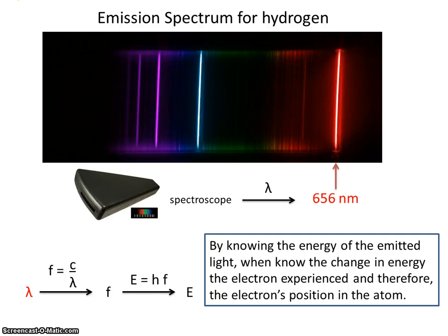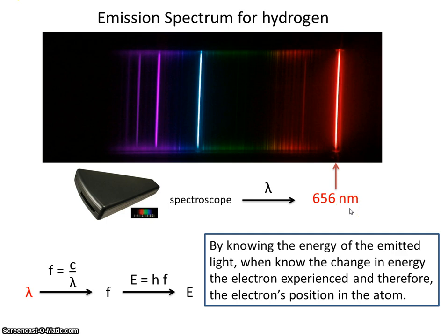So in summary, every element gives off its own colors of light — it's almost like a fingerprint that's unique for each element. And using a spectroscope, we can calculate what the wavelengths are that are emitted by that particular element. Knowing the wavelength, we can calculate the frequency. Knowing the frequency, we can calculate the energy. And by knowing the energy, that tells us information about the electron's position within the atom.